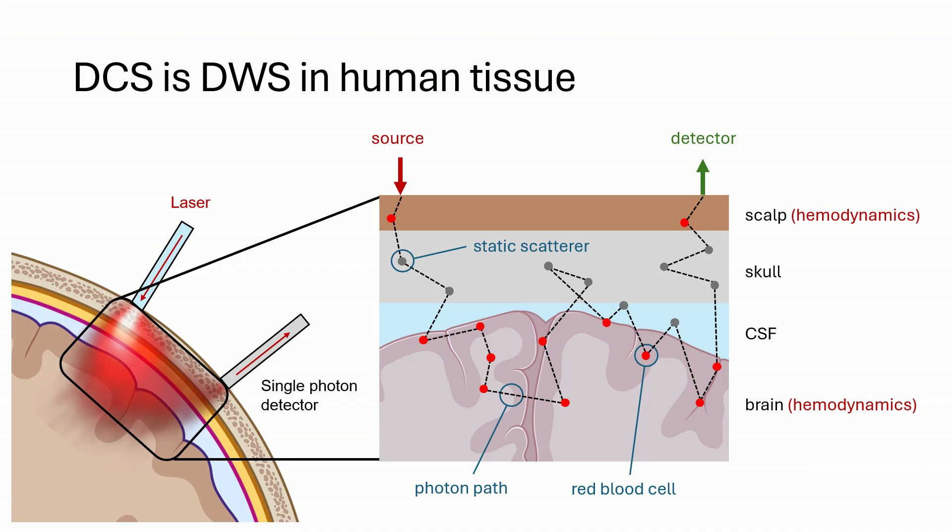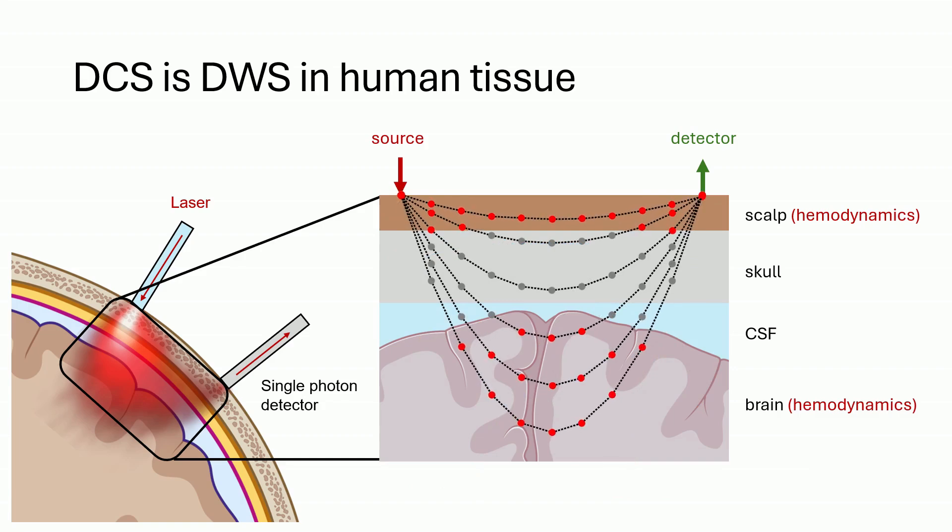For a simple visualization, I depict multiple photon paths as parabolic trajectories, called the photon path length distribution. This distribution is dependent on the tissue sample of interest, source and detector positioning, as well as tissue optical properties.